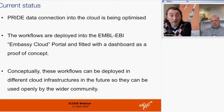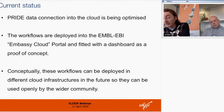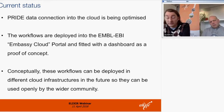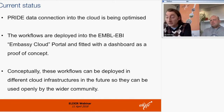Regarding current status: the PRIDE data connection is being optimized into the cloud, the workflows are deployed into the EMBL-EBI EMBASSY cloud portal fitted with a dashboard, as a proof of concept. Conceptually these workflows can be deployed in different cloud infrastructures, but for now they are in the EMBASSY cloud. As an outlook, these clouds can be federated — meaning different cloud environments can be used in concert — to reach scales that are fit for super-large datasets.